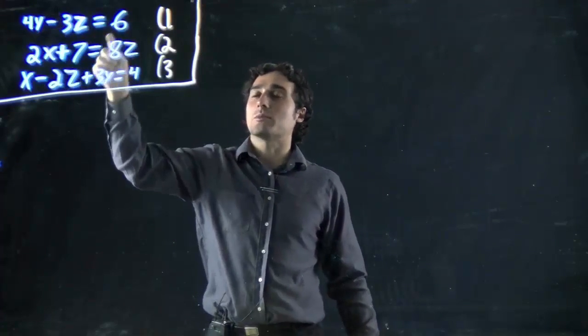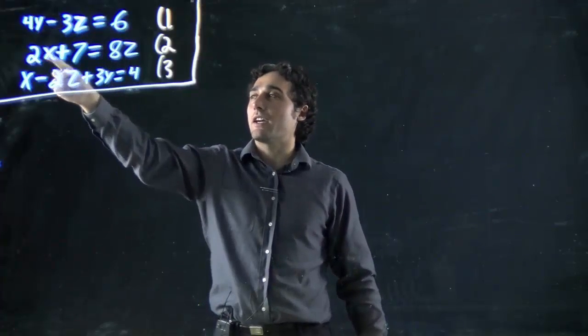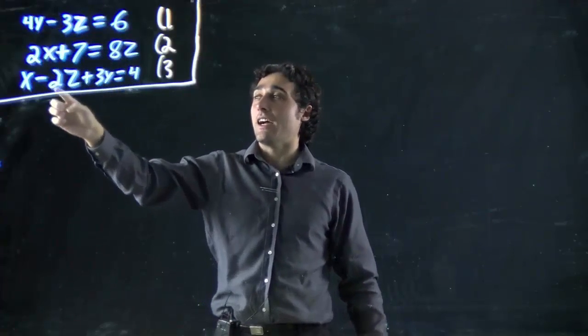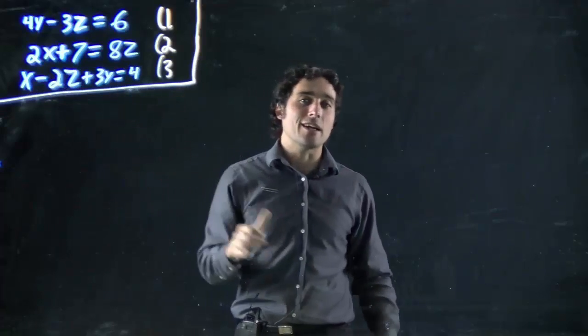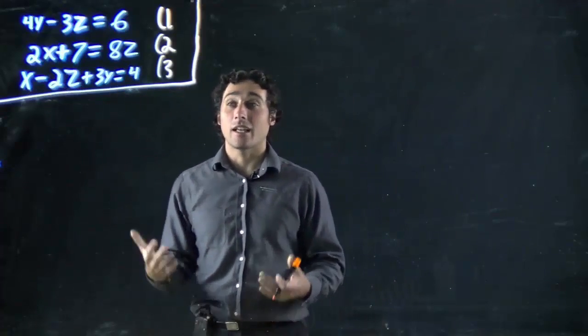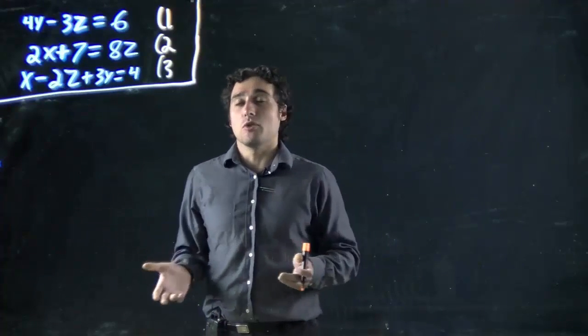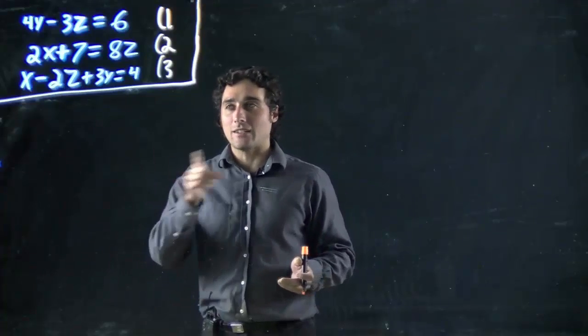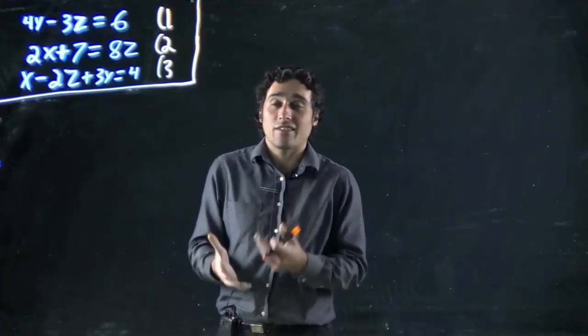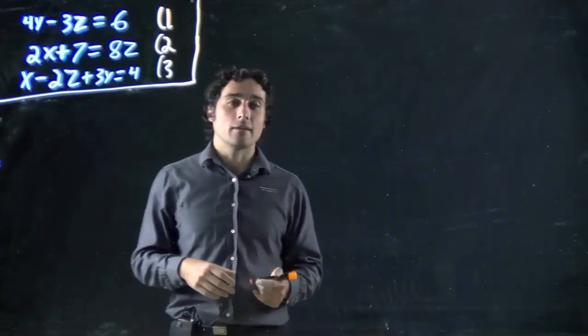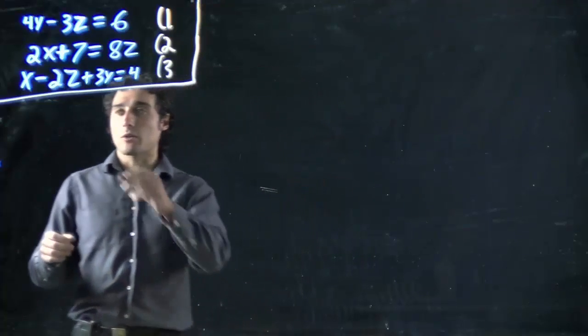If I can solve y in terms of z, I can replace this y. If I can solve x in terms of z, I can replace this x. Then I have an equation just with z in it. That's what I want. Because then, no matter how ugly it might be, I can solve for z in terms of a number, get the value of z, and then figure out x and y. That's what we're going to do, and we'll start with equation one.